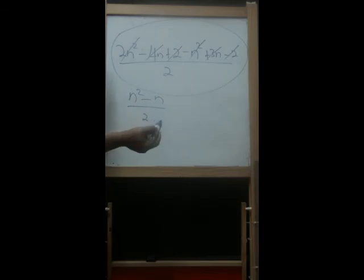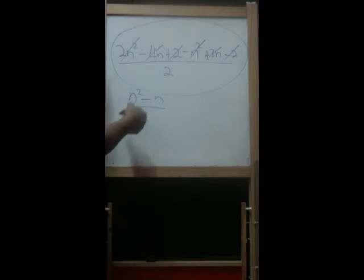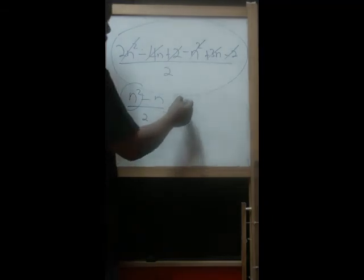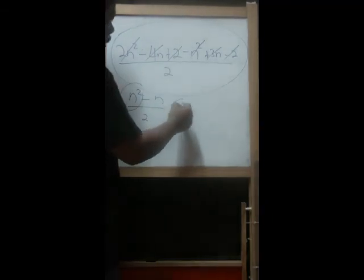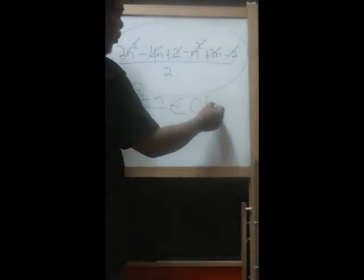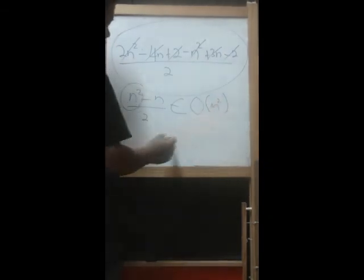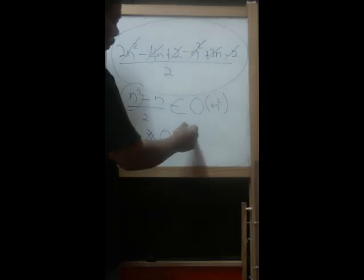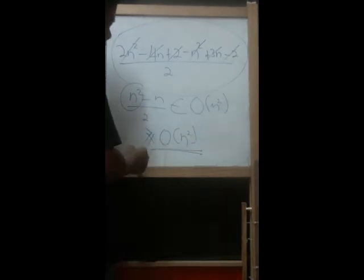We can omit the lower-order constant and take the highest-order term, so we can conclude that this is an element of O(n²). Simply, we declare this algorithm is big O of n squared.